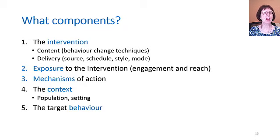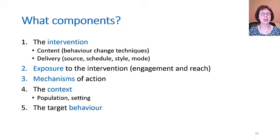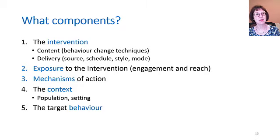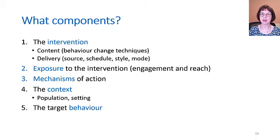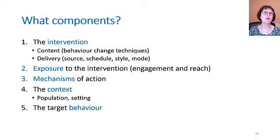Secondly, we have the exposure to the intervention — this is crucial to understanding its effectiveness. This is not only reach, but also the extent to which people that the intervention did reach actually engaged with it. Then we have mechanisms of action — the processes by which the intervention had its effect — and the context of that intervention: the target population, the setting in which the intervention was delivered. And finally, the target behaviour itself. All of these need to be defined if we are to understand the impact of interventions.